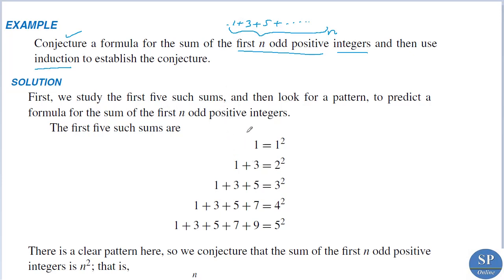Consider a common formula for the first few odd numbers. For the first number: 1 is equal to 1 squared. For the first two odd numbers, that is 1 plus 3, we know 1 plus 3 is equal to 4, and it can be written as 2 squared.